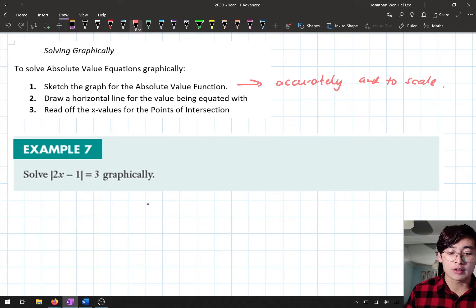The second part is draw a horizontal line for the value being equated with, and we've done a bit of practice with that when we're looking at points of intersection. And the final step is to read off the x values of the points of intersection.